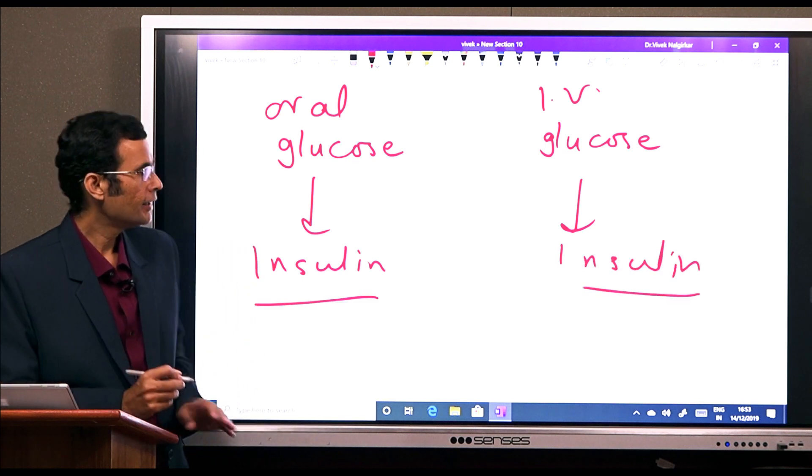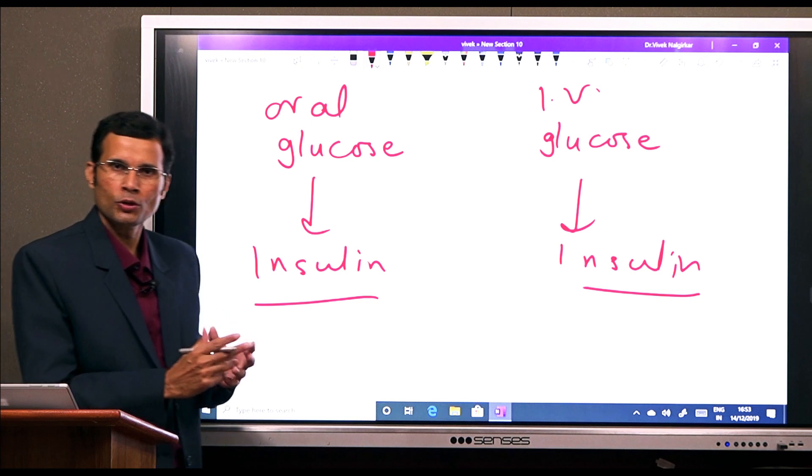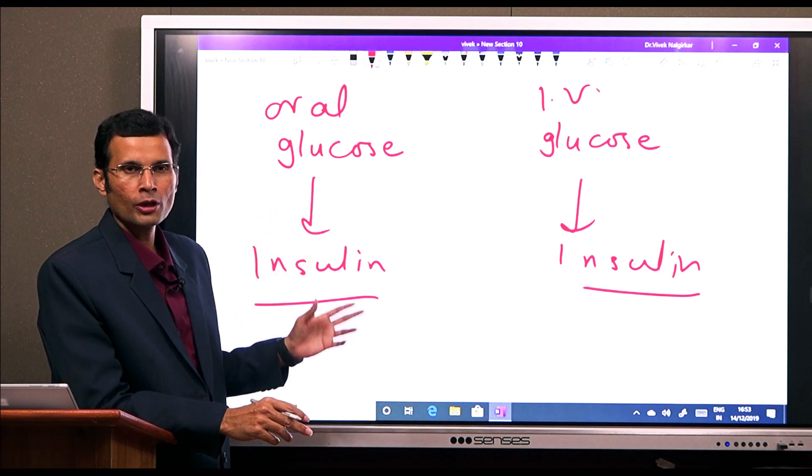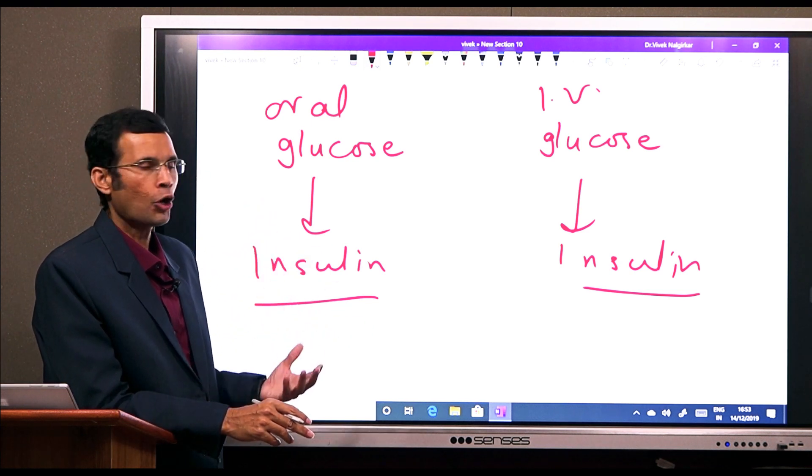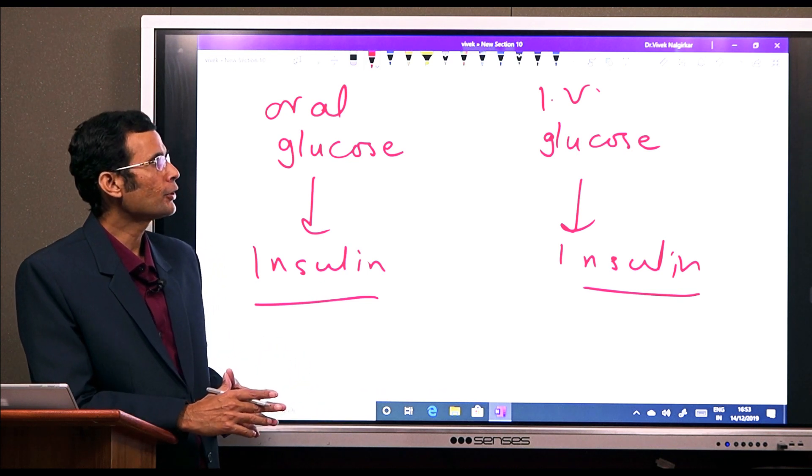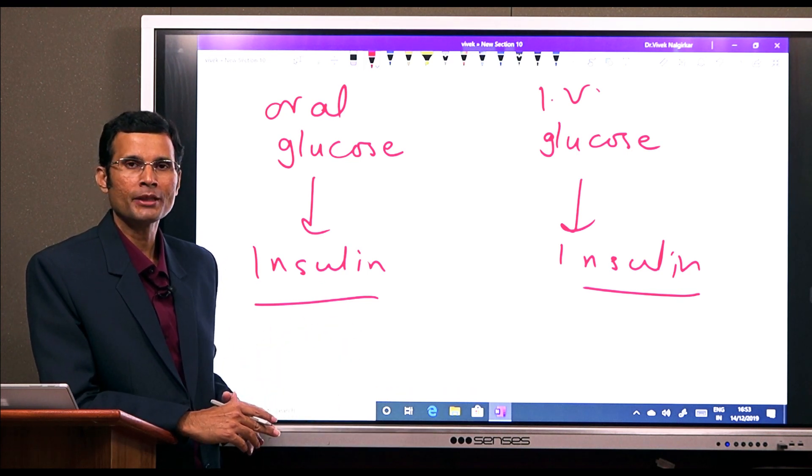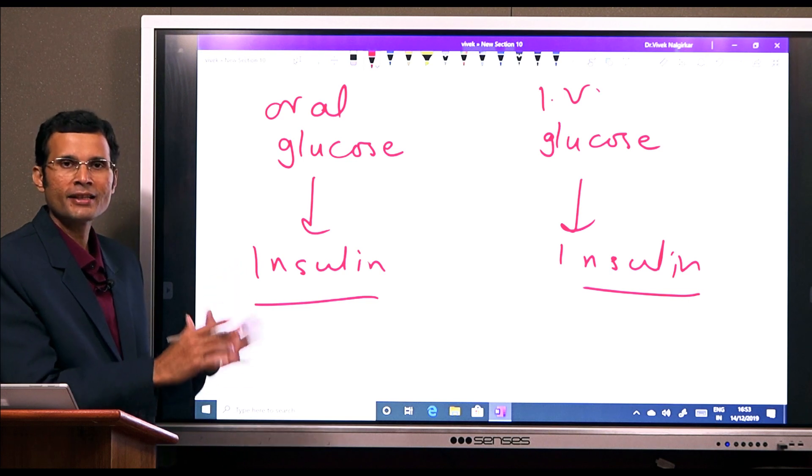But then, it is known that oral glucose would cause more insulin secretion compared to intravenous glucose administered. Why is that?